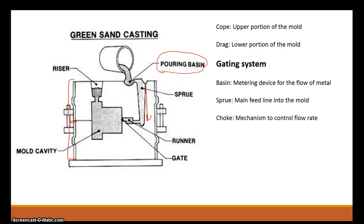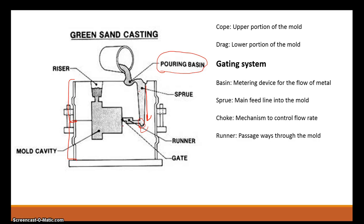From the sprue, the metal runs into something called the choke. The choke is just another mechanism that controls the flow rate. Remember, the molten metal is free-falling down the sprue, so it picks up a lot of speed, potentially getting air pockets and turbulent flow. The choke slows down the flow of the metal so it doesn't race into the mold cavity with a lot of trapped air. Next is the runner, which is simply a passageway through the mold — the piping that travels from the choke through the mold body.